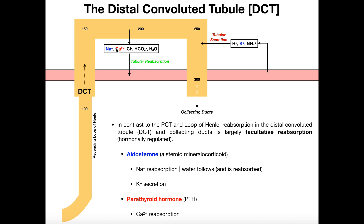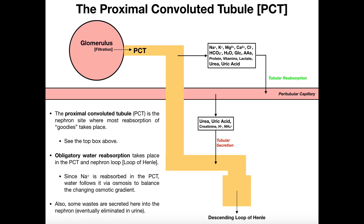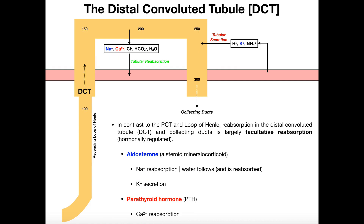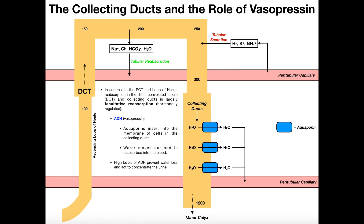We can choose - if there's excess of some wastes, we can secrete more of them into the distal convoluted tubule. And if we need to get more sodium or more calcium or some of these other things, then we can choose to reabsorb more of them. In contrast to the PCT and the loop of Henle, the distal convoluted tubule and the collecting ducts are hormonally regulated, and we can significantly alter the amount of what's reabsorbed and secreted there.